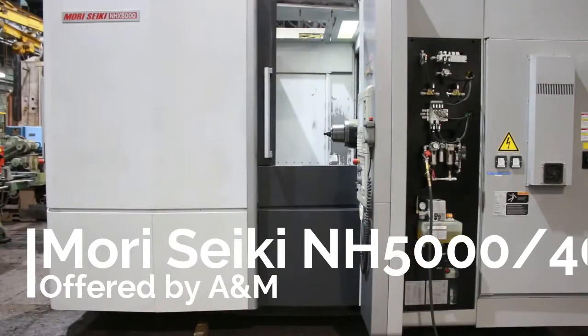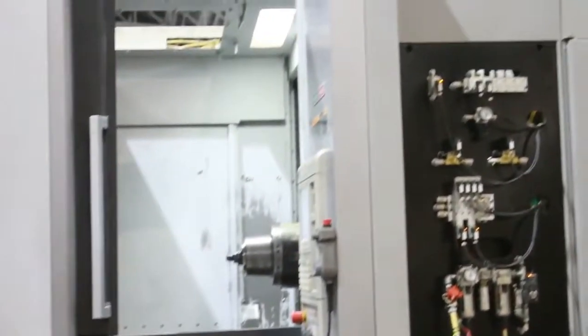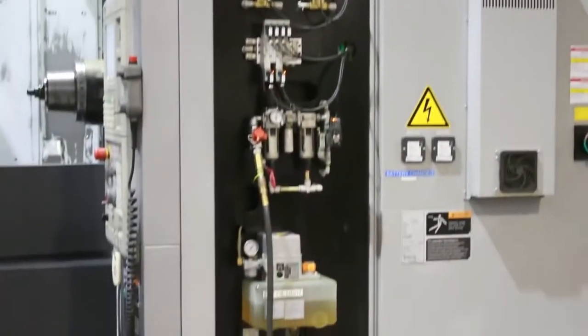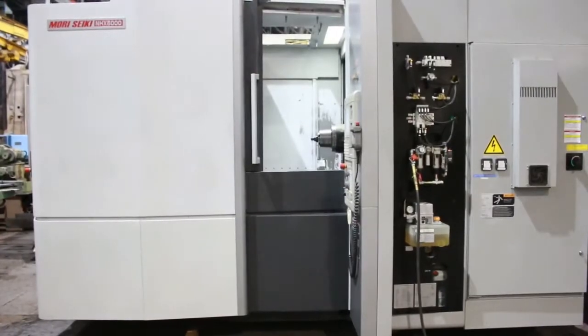Okay, we have a Mori Seiki Horizontal Machining Center model NHX 5000, new in 2012. It's a four axis machine, serial number NHX 501-203-06, and we're gonna run her for you.